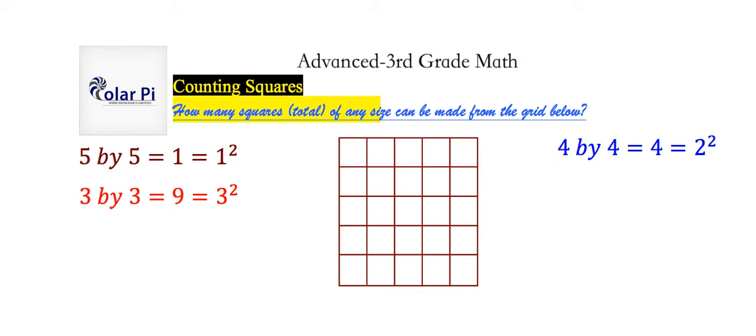Now, I'll leave the task of counting the 2x2s to you, but if you count carefully and correctly using the strategies I just showed you, you should get that there are 16 2x2s, and 16 is 4 squared. And as we already said, there are 25 1x1s, and 25 is 5 squared.